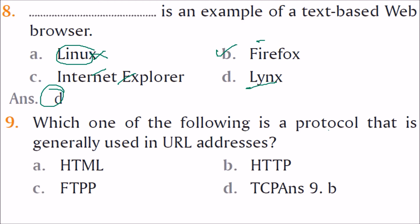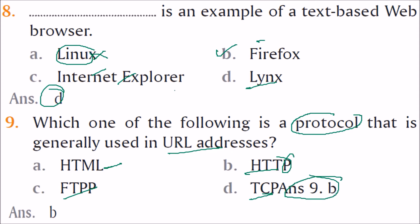Which of the following is a protocol generally used in URL addresses? HTTP — Hypertext Transfer Protocol — is the protocol used in URLs. FTP is a file transfer protocol, HTML is a language, and TCP is Transmission Control Protocol. So the answer is B: HTTP.